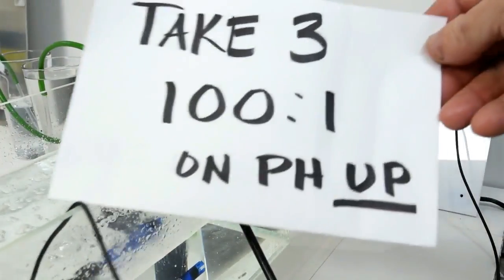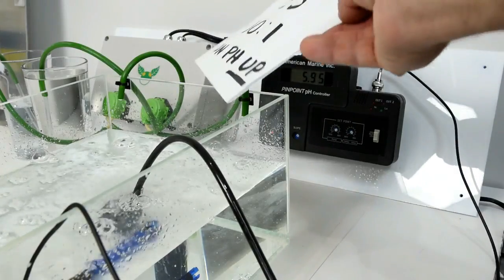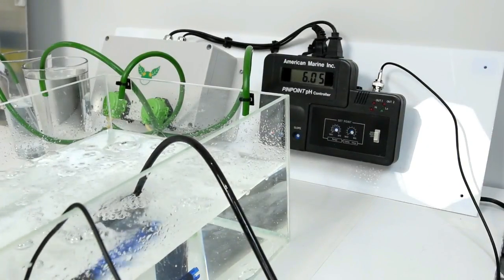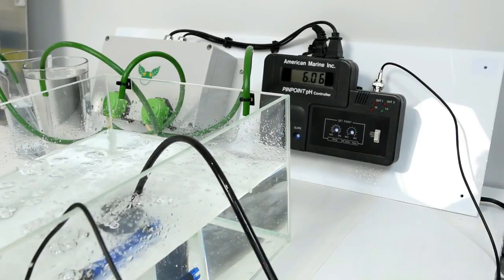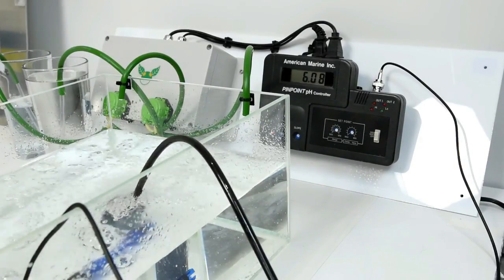That could either be because General Hydroponics made the pH down stronger for some reason, or it could be because when I use my pH up and down over the last six months, these bottles are old, I didn't shake it properly. When you don't shake any nutrient bottle properly, the strong stuff settles at the bottom and the weak stuff is up at the top where you're pouring.